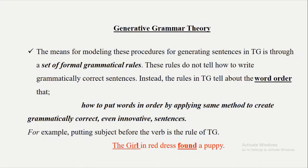The means for modeling these sentence-generating procedures in Transformational Generative Grammar is through a set of formal grammatical rules. These rules don't tell how to write grammatically correct sentences. Instead, they tell us about word order — how to put words in order by applying set methods to create grammatically correct sentences, even if they are new sentences for a speaker. For example, putting subject before the verb is a rule of Transformational Generative Grammar.